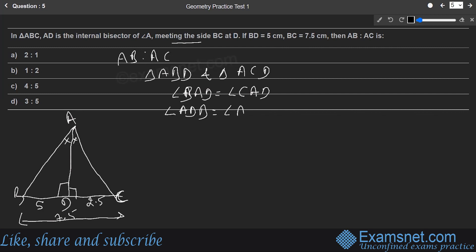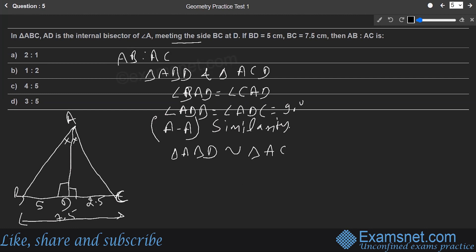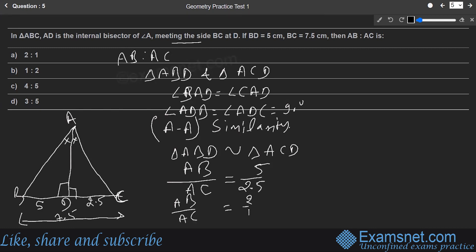By the Angle-Angle axiom of similarity, triangle ABD is similar to triangle ACD. Therefore AB/AC = BD/CD = 5/2.5 = 2/1. The ratio AB:AC = 2:1, which is option A.